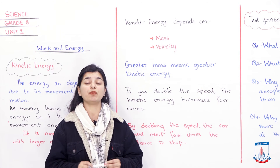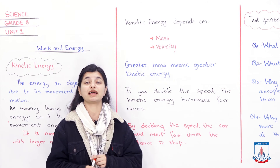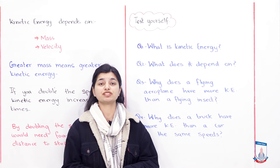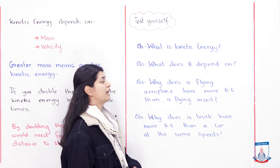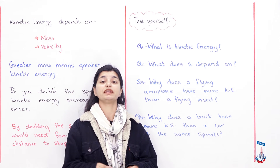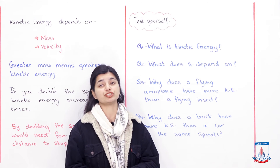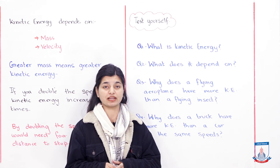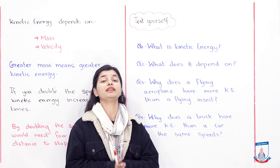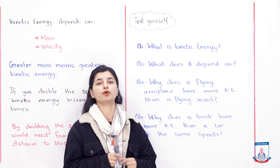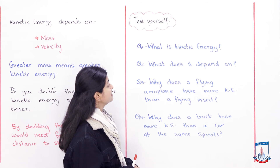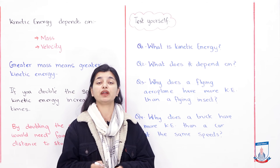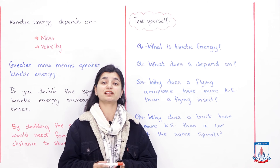Now, because we have covered it, I want us to answer some questions from your textbook to see how much we have understood this sub-topic. Question 1: What is kinetic energy? It is the energy possessed by objects when they are moving or in motion. There is also a definition written in the book — you can write it in your own way. Question 2: What does kinetic energy depend on? Kinetic energy depends on two things: mass and velocity.